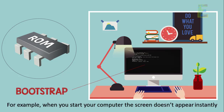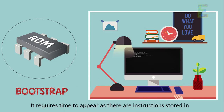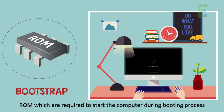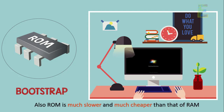For example, when you start your computer, the screen doesn't appear instantly. It requires time to appear, as there are instructions stored in ROM which are required to start the computer during the booting process. Also, ROM is much slower and much cheaper than RAM.